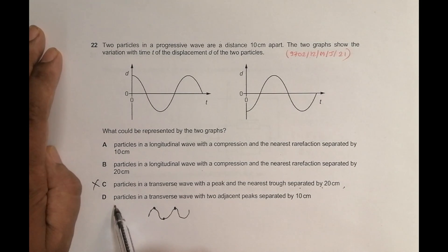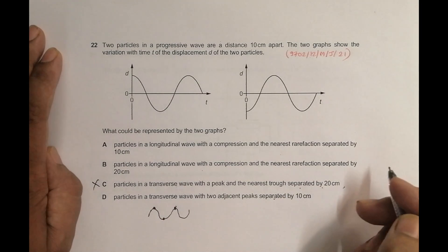In choice number D, we have got particles in a transverse wave with two adjacent peaks. Peaks means this and this, separated by 10. It's not true because at the two peaks, the vibration would be in the same phase. The oscillation would be in the same phase.